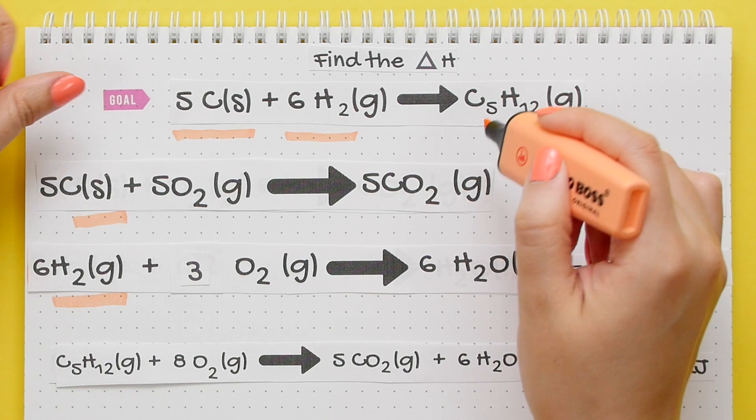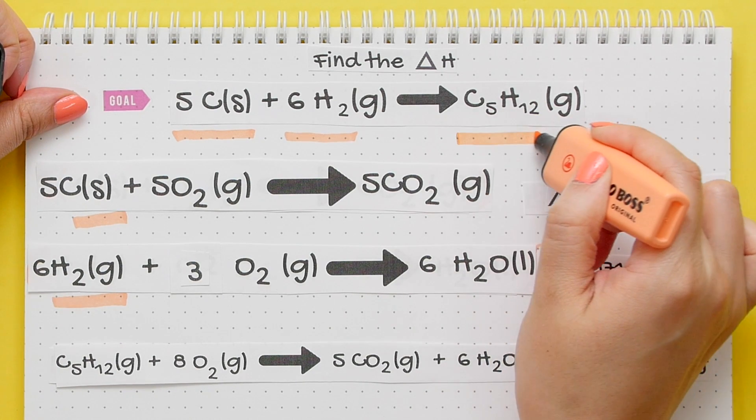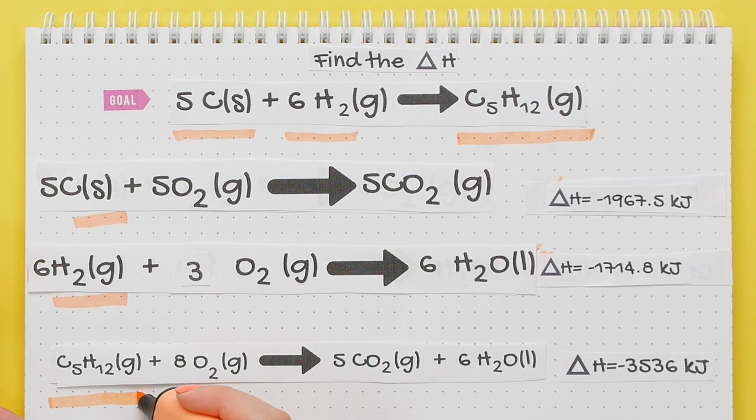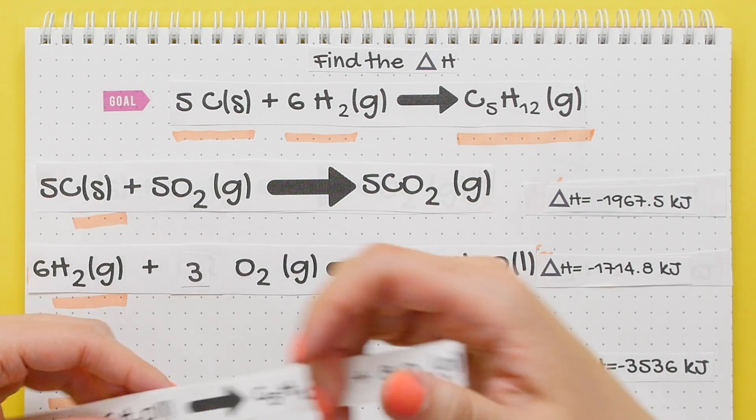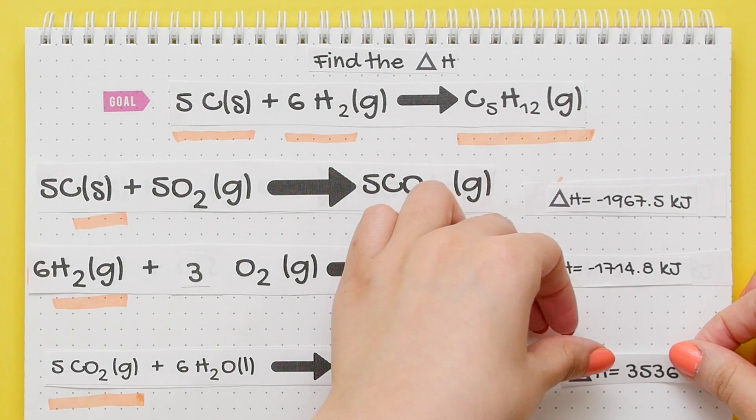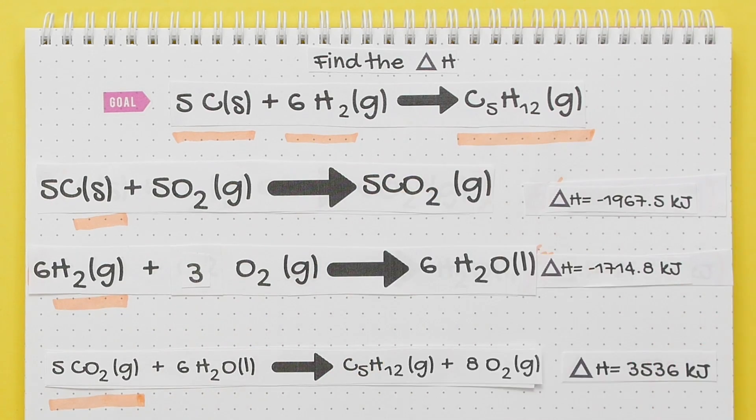Now we will look at our product in the goal reaction, and we'll see it's not on the correct side. We want it to be on the product side, but it's currently on the reactant side. So to switch that around, we have to flip the reaction. Whenever you flip a reaction, you must multiply your enthalpy change by a negative one. So our enthalpy change went from being negative to positive.